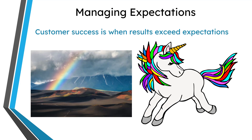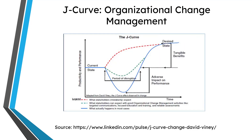I had a former boss at PTC who told us all the time that customer success occurs when results exceed expectations. When you're changing or choosing your CAD tool, a lot of times people think that we make this change and all of a sudden it's going to be all rainbows and unicorns — and it's never that way. There is something in organizational change management called the J-curve. Whenever you make a change, you're always going to have a period of disruption and a severe dip in productivity. You've got to take that into account. A lot of people think that things will be great — all we have to do is change our tool. But you have what's called the valley of despair. Prepare yourself for it.